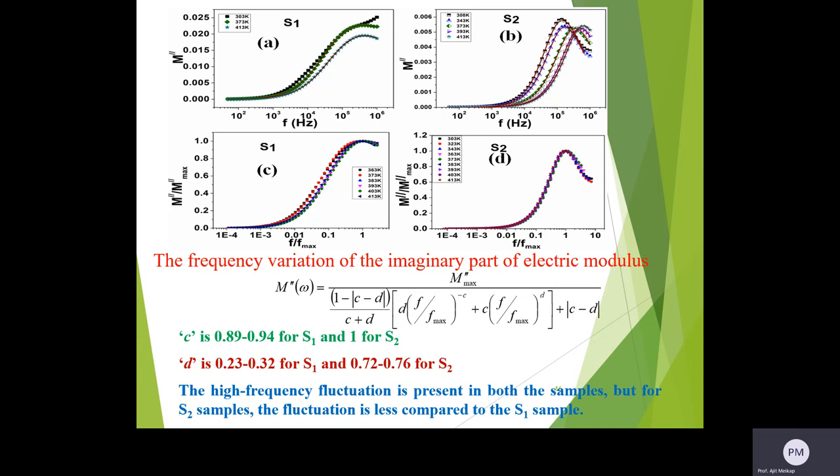The normalized electric modulus for S1 and S2 sample are demonstrated here. The normalized curve for S1 sample do not merge on the single master curve, although for S2 sample they overlap on a single curve. So for S1 the dynamical properties change with temperature, whereas for S2 sample it is temperature independent.